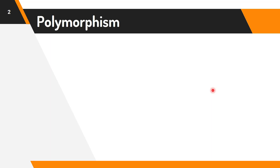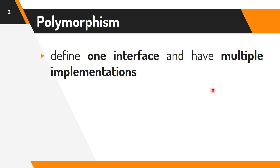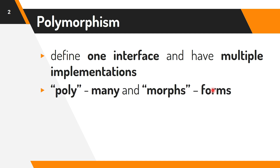Polymorphism is considered as one of the important features of object-oriented programming. It allows us to perform a single action in different ways. In other words, polymorphism allows you to define one interface and have multiple implementations. It comes from the word 'poly', which means many, and 'morphs', which means forms.